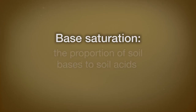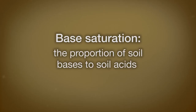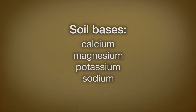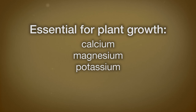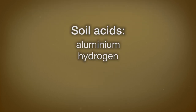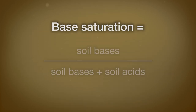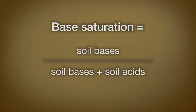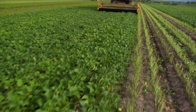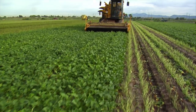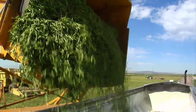Base saturation is another important chemical property. It is the proportion of soil bases to soil acids, expressed as a percentage. The soil bases are calcium, magnesium, potassium, and sodium — the first three of which are essential for plant growth. The soil acids are aluminum and hydrogen, which are detrimental to plant growth. Thus, when growing crops or trees, soils with high CEC and good base saturation are most likely to promote high productivity.